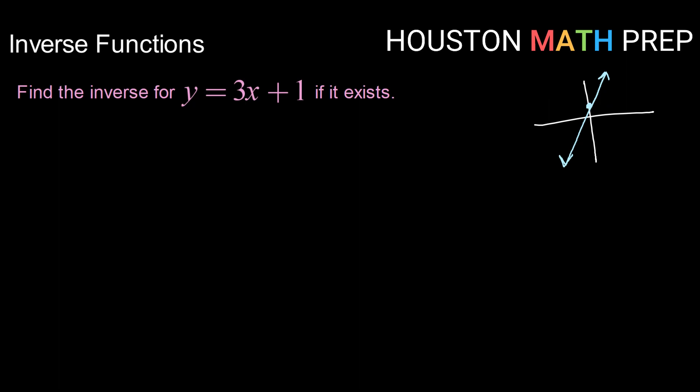So I know that it is a function because it passes the vertical line test and if I were to drag horizontal lines it also passes the horizontal line test. So this is a one-to-one function which means it will have an inverse.